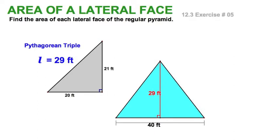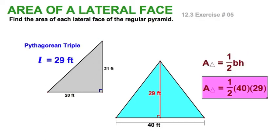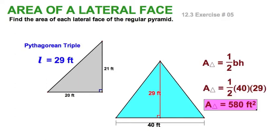I'll clear up this image. We know the area of a triangle is one-half base times height. We'll just substitute. We have a base of 40 and a height of 29, and that'll work out to 580 square feet for one of the lateral faces.